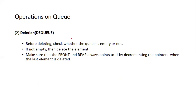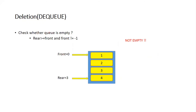Coming to the dequeue (DQ) operation: before deleting, we check if the queue is empty (QMT). We also make sure that the front and rear always point to minus one by resetting the pointers when the last element is deleted. The queue is empty when front equals minus one, or when front is greater than or equal to rear and front equals one.